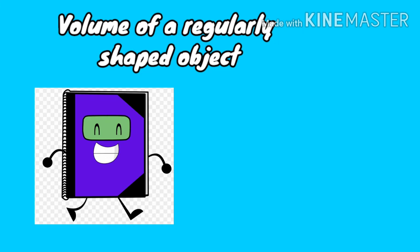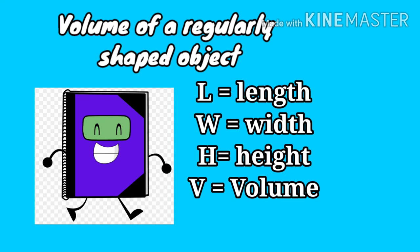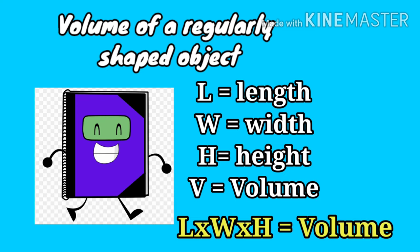The volume of an object represents the space it takes up in a 3D space — that's according to NASA. For regularly shaped objects like a rectangular object, you can measure the length, width, and height to find the volume. Multiply the length times the width, and multiply the result by the height. The result is the volume.